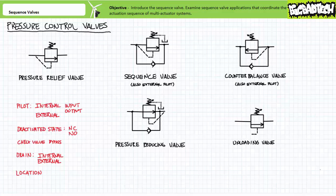Pressure control valves look and behave astoundingly similar to one another. As the name implies, they do something when pressure reaches a certain value. Pressure control valves come in five main types: pressure relief valves, sequence valves, counterbalance valves, pressure reducing valves, and unloading valves.